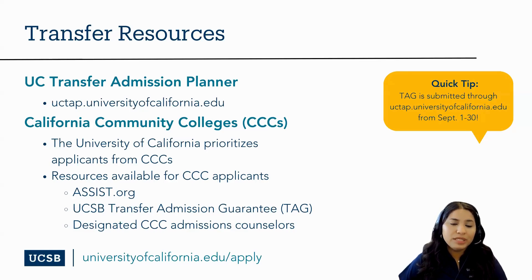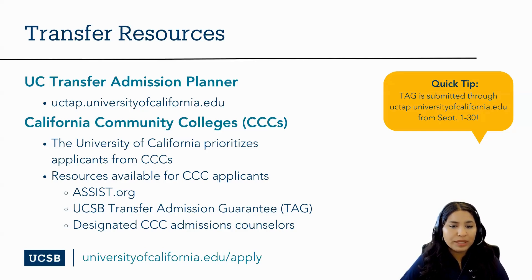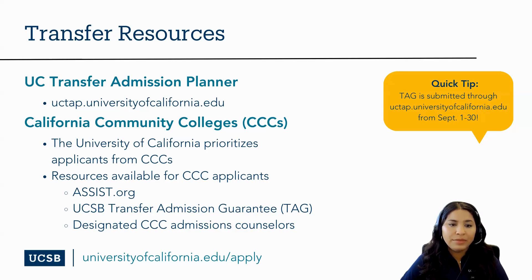We strongly encourage you to create a UC Transfer Admissions Planner, or UC TAP account, where you'll be able to track and plan your coursework and progress for meeting UC eligibility requirements. This will also allow UC staff to communicate important information. UC TAP is also where you can submit your TAG applications from September 1st to September 30th. The University of California prioritizes applicants from California Community Colleges, and those applicants can utilize assist.org to review course transferability and major preparation requirements. California Community College students can also take advantage of designated UC admissions counselors.